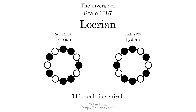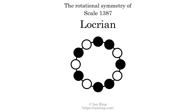The inverse of a scale is a mirror image — it is what you get when the sequence of intervals is reversed. The inverse of this scale is scale 2773, also known as Lydian. This scale is achiral, since it can transform into its own reflection by a rotational transformation. This scale has no rotational symmetry.